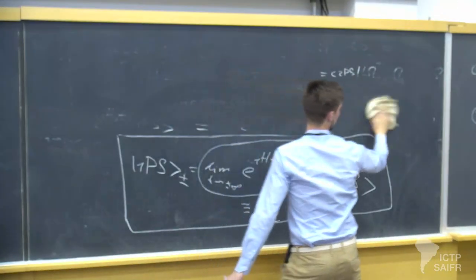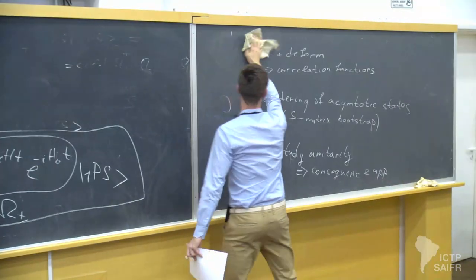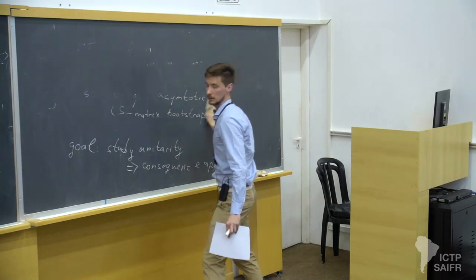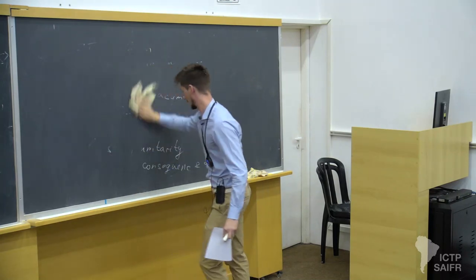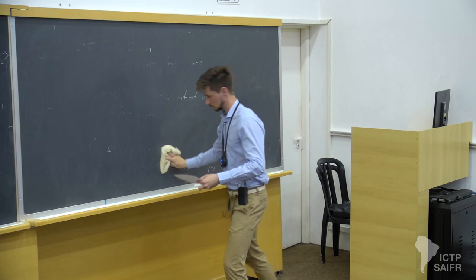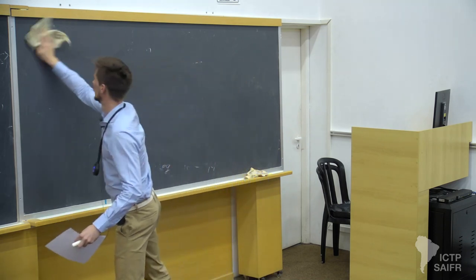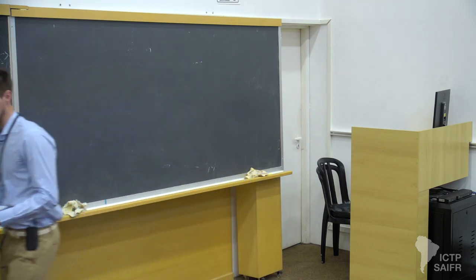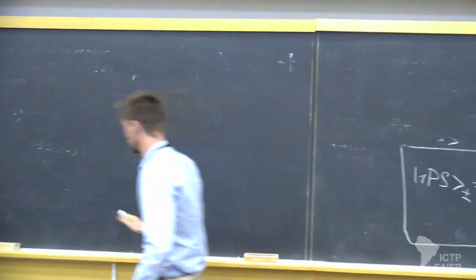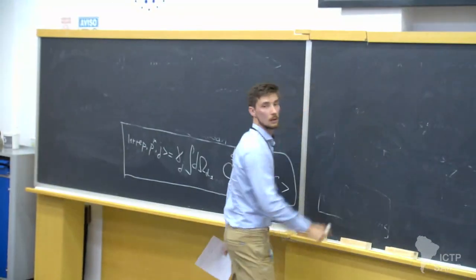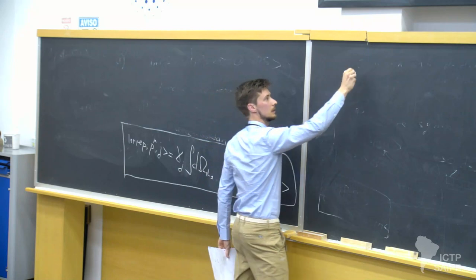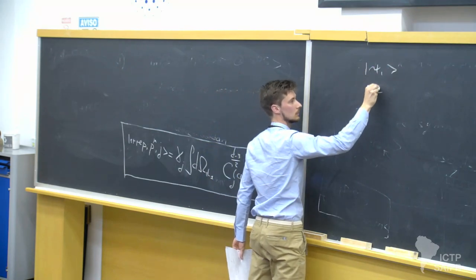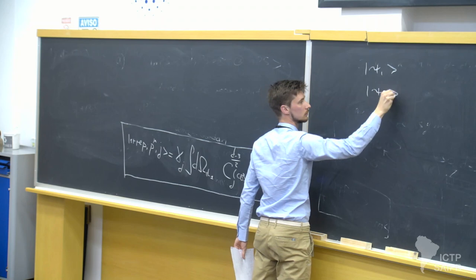Using these definitions, let's get to the main object I would like to construct. What I will do now is define three states: Psi-1, Psi-2, and Psi-3.